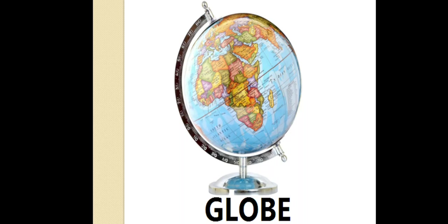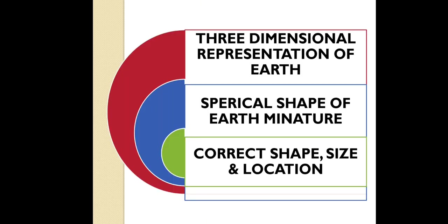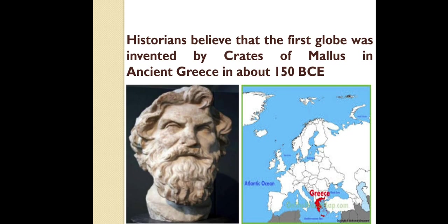We will first look at what is a globe. A globe is a three-dimensional representation of Earth. It represents the spherical shape of Earth in miniature and helps to understand the correct shape, size, location of continents, oceans and countries. It is said that the earliest globe was made by Crates in Greece in the year 150 BC.